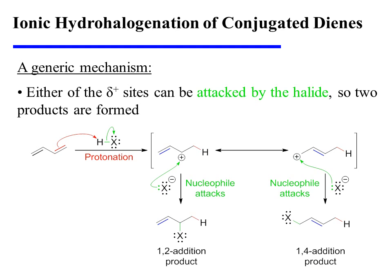The reason for the name stems from the fact that the hydrogen and the halogen are either on adjacent carbons, or they are separated by four intervening atoms, hence the name 1,4.